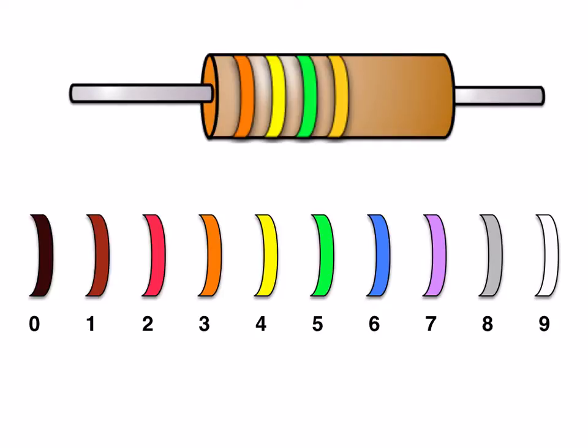Okay, the way it works out is each color represents the number. So for the first stripe, orange is three, yellow is four, green is five. Now the third stripe tells you the number of zeros, so you want to put five zeros. So it's three, four, followed by five zeros.